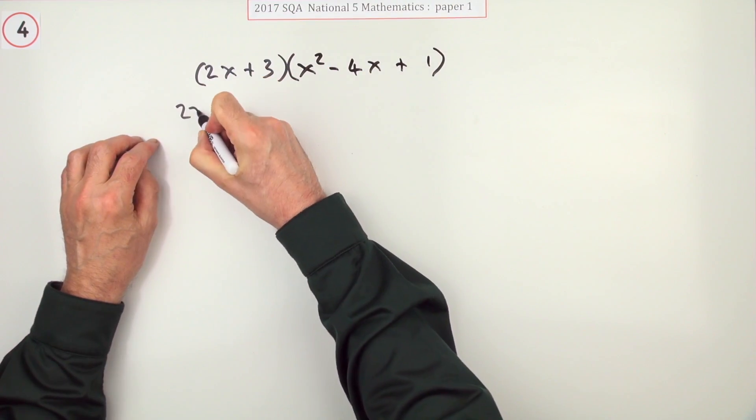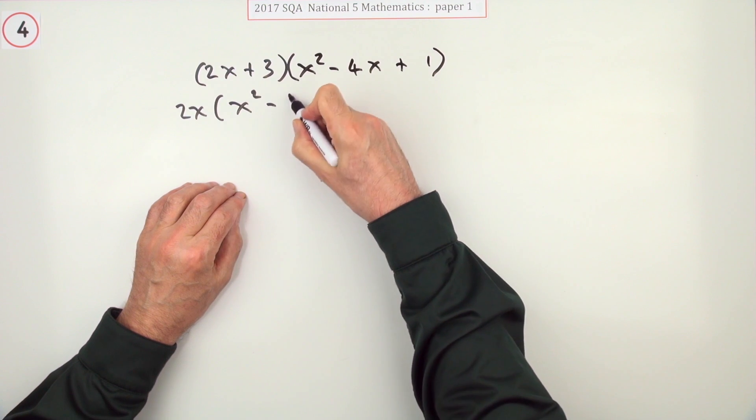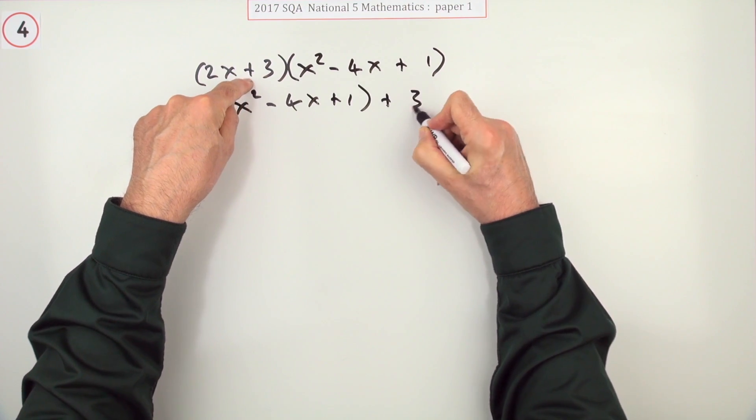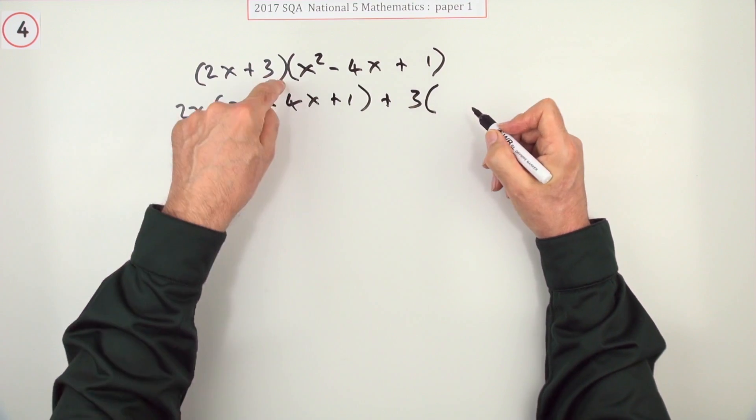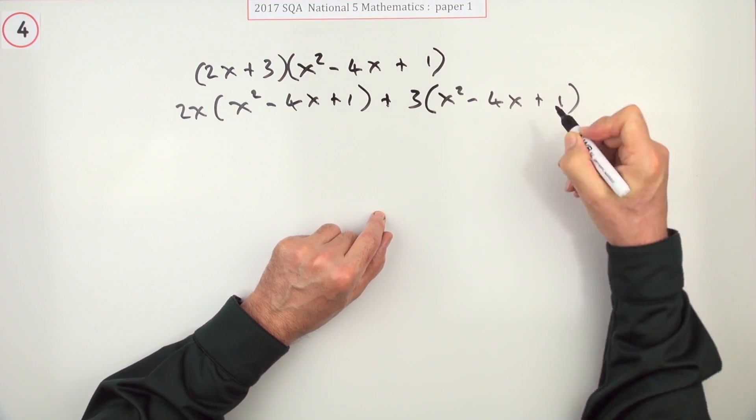Each gets a turn, so the 2x gets to multiply it, so x² minus 4x plus 1 gets multiplied, and the 3 also wants to multiply x² minus 4x plus 1, so it gets to multiply it.